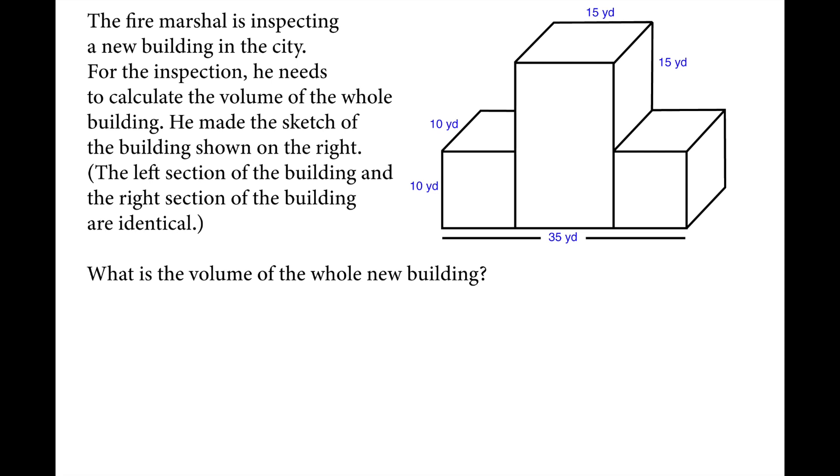The fire marshal is inspecting a new building in the city. For the inspection he needs to calculate the volume of the whole building. He made the sketch of building shown on the right. The left section of the building and the right section of the building are identical. What is the volume of the whole new building?